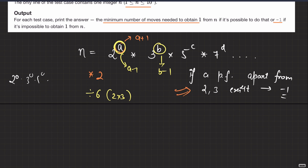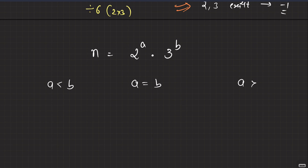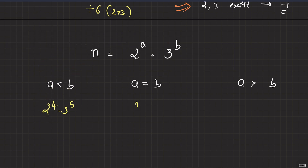Now we are dealing with a number that only has 2 and 3 in its prime factorization: n = 2^a × 3^b. There can be various cases for the powers a and b: 'a' can be less than 'b', 'a' can be equal to 'b', or 'a' can be greater than 'b'. Let's take examples: 2^4 × 3^5 for a < b, 2^4 × 3^4 for a = b, and 2^5 × 3^4 for a > b.